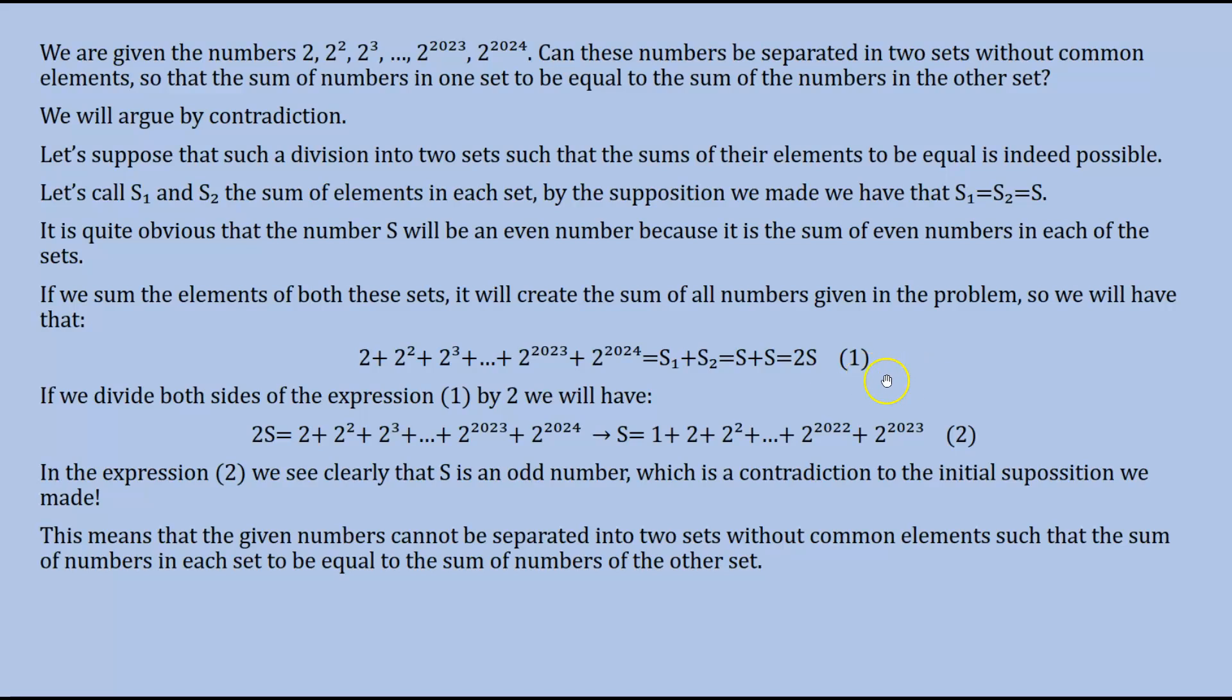In the expression number 1, we can divide both sides, left-hand side and right-hand side, by 2. And we will have that from 2S is equal to the sum of all the elements of the given problem, we will have that S is equal to 1 plus 2 plus 2 to the power 2 until 2 to the power 2023.